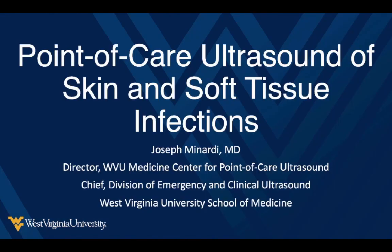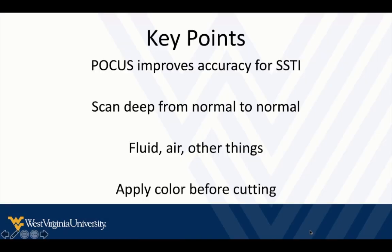We're going to talk about skin and soft tissue lesions, because some of these you look at and they turn out they're not infections at all. Key points: point-of-care ultrasound improves your accuracy for skin and soft tissue infections or lesions. When scanning, go deeply from normal tissue through the area of concern to normal tissue again, covering all borders. You're looking mostly for fluid, but sometimes you'll see air, lymph nodes, masses, or other lesions. And always, always, always apply color Doppler before you cut anything — make sure it's not a vascular structure.